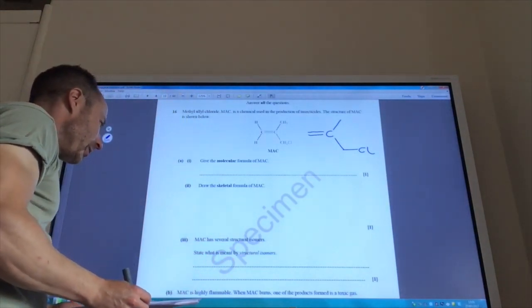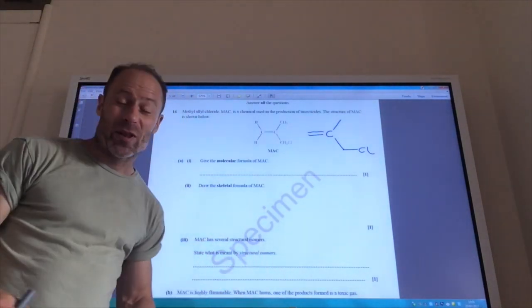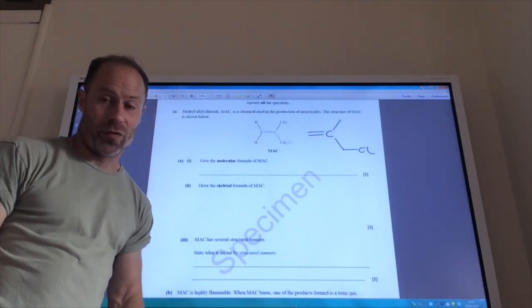Mach has several structural isomers. What are meant by structural isomers? Structural isomers are compounds with the same molecular formula, but a different structural formula.